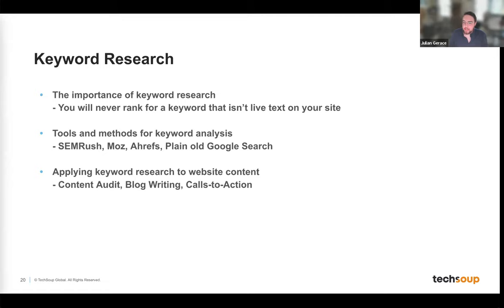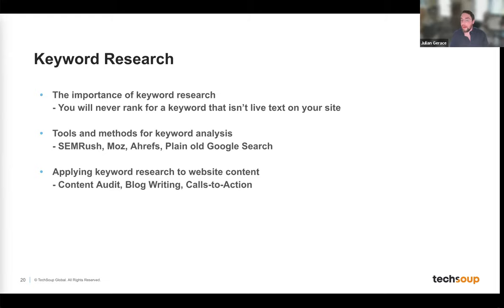After technical setup, the next big step is keyword research. Once you have Google Search Console, you can ask: what am I actually ranking for? It may be completely different from what you expect. You'll want to rank for your brand name but also for general terms. For example, if you help people with down payments on their first home, you want to rank for 'down payment assistance' or 'first-time home buyer' — not just your organization name, since potential clients won't know it yet. Tools include SEMrush, Moz, and Ahrefs. For a quick check, use Google in incognito mode.